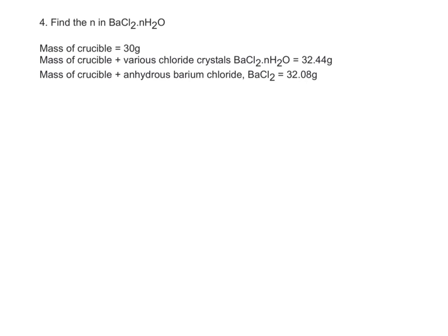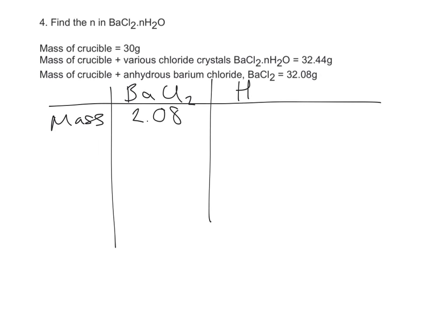So I'm going to start by looking at the mass of barium chloride. So what I need to do here is take 30 grams away from 32.08, because obviously I can't look at the crucible mass, and that tells us that 2.08 grams of barium chloride reacted. So there's our mass. I'm so scruffy at writing this. Okay, as usual, we've got our water, so we need to work out the mass. So all you need to do here is 32.44 take 32.08 to work out the mass of water, and according to my calculator, that's 0.36.